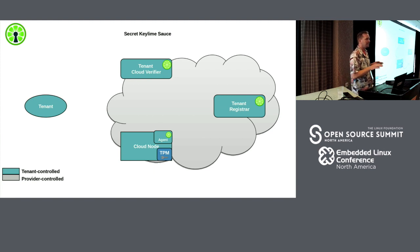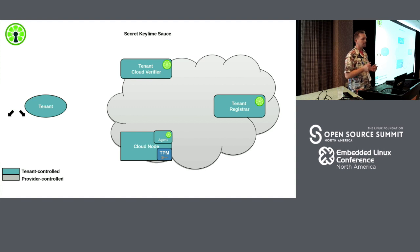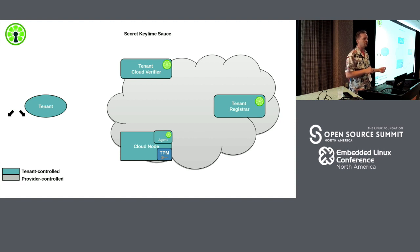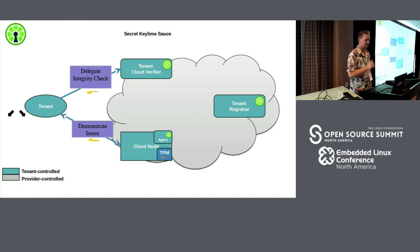Here's the KeyLime secret sauce: a boot key is cryptographically split into two pieces. This ensures we can delegate the security checking piece to the verifier, while preventing the verifier from being able to spin up nodes on its own. The other half of the key is held by the tenant and only passed to a node when the tenant wants that node to actually come up and be provisioned. The first half goes to the verifier for delegation checks; the second half demonstrates the intent that the tenant actually wants to bring up the node.